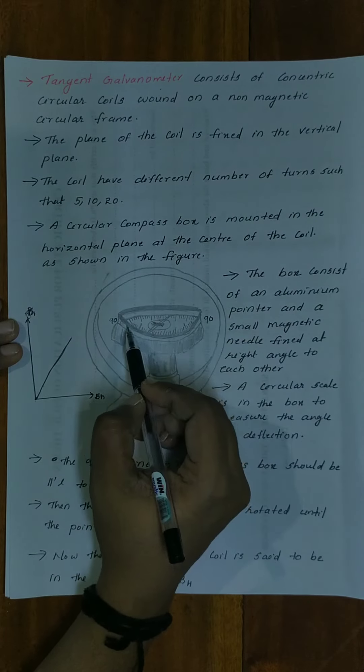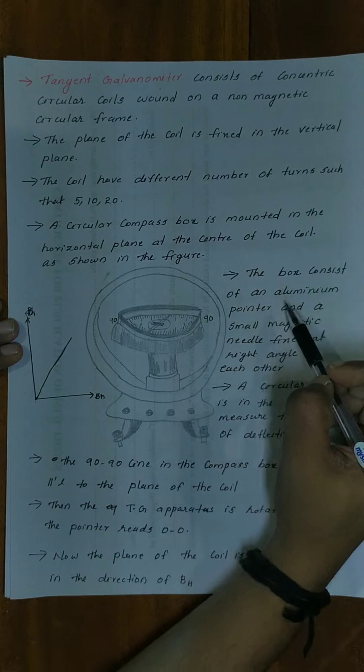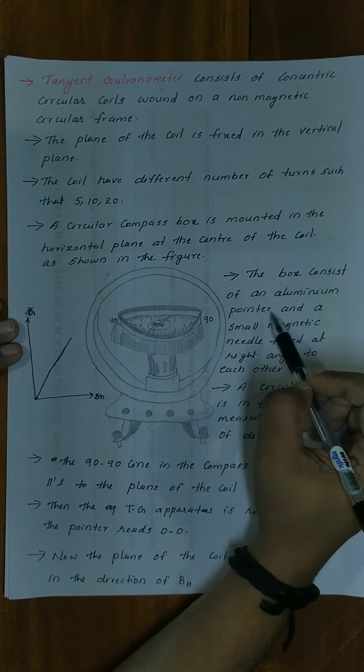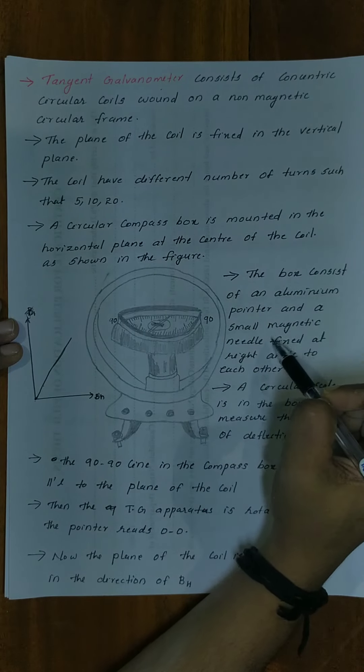The compass box consists of an aluminum pointer and a small magnetic needle fixed at right angles to each other. A circular scale is provided in the box to measure the angle of deflection.